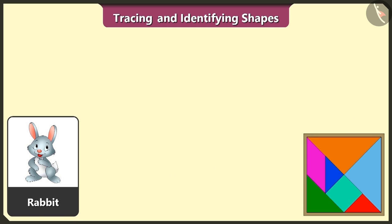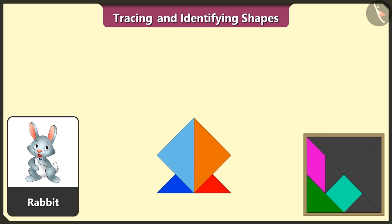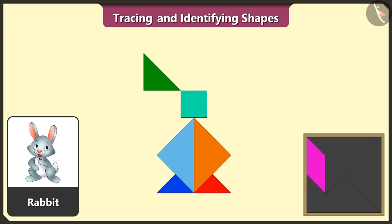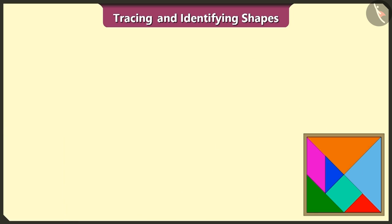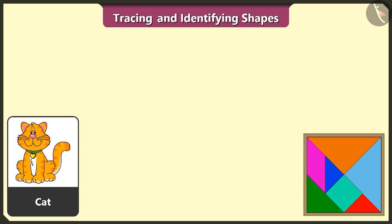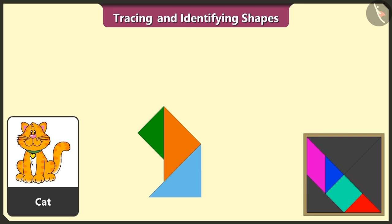This is a rabbit. Now we will try to create a rabbit using four triangles, one square, and one more triangle and one quadrilateral. See, the rabbit is ready! This is a cat, so let's make a cat using three triangles, one quadrilateral, one square, and the remaining two triangles.